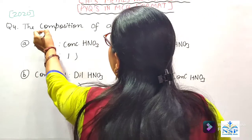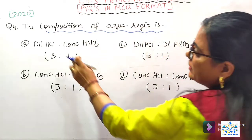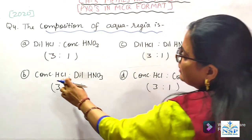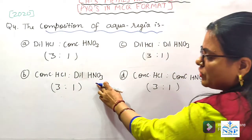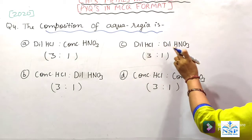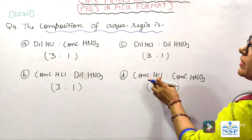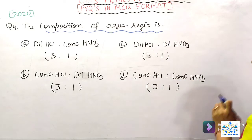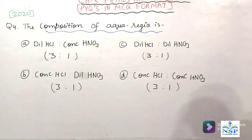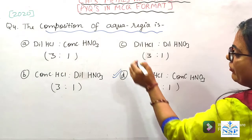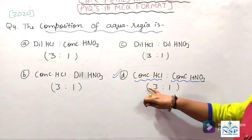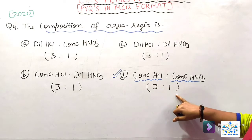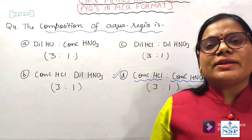Question number 4: the composition of aqua regia. Options: (A) Dilute HCl and concentrated HNO3 in ratio 3:1, (B) Concentrated HCl and dilute HNO3 in ratio 3:1, (C) Dilute HCl and dilute HNO3 in ratio 3:1, (D) Concentrated HCl and concentrated HNO3 in ratio 3:1. Option D सही है — aqua regia में दोनों ही concentrated acid होते हैं: concentrated HCl and concentrated HNO3 in 3:1 ratio। ये इतना strong होता है कि gold को भी dissolve कर देता है।